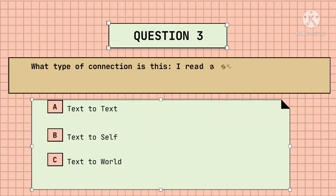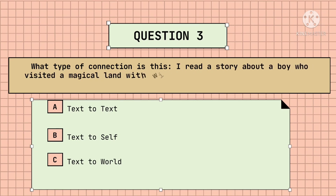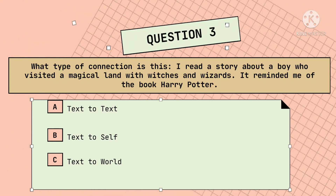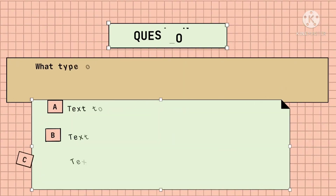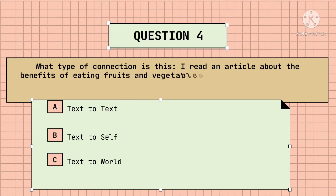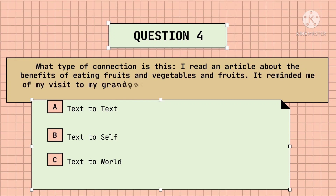How about this? Is it text-to-text, text-to-self, or text-to-world? You can pause the video before I reveal the answer. Good job! That is text-to-text. Next, what type of connection is this? Text-to-text, text-to-self, or text-to-world? Wow! That is text-to-self.